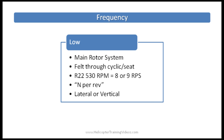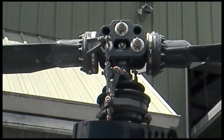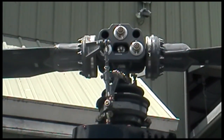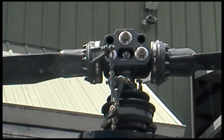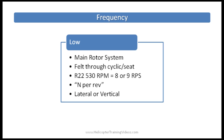Low frequency vibrations. Usually the main rotor system has the slowest RPM of all rotating parts and so has the slow or low vibration associated with it. This would be felt through the cyclic, maybe the seat. The R-22 main rotor is about 530 revolutions per minute, which is about 8 to 9 revolutions per second.